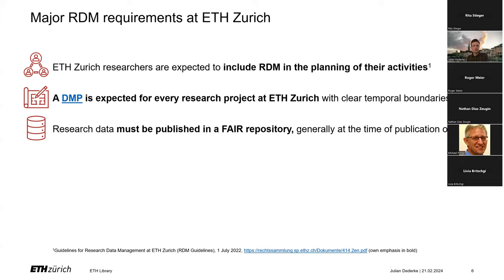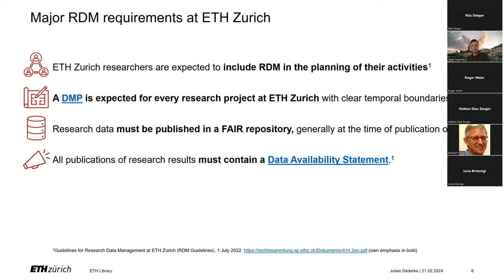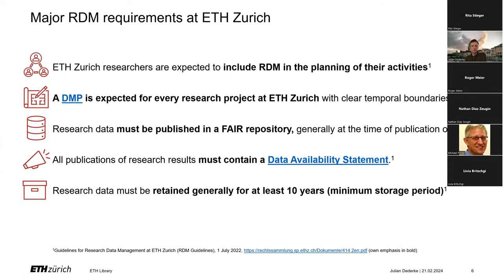Third, research data must be published in a FAIR repository, generally at the time of publication of results — for example, once a journal article is published. Of course, there can be exceptions with regards to legal conditions and confidential data, or if contract agreements prevent one from publishing research data. Fourth, all publications of research results must contain a data availability statement, meaning that in a research article it should be made clear what data the article is based on and where they can be found.